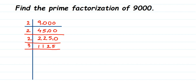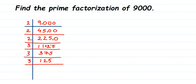Now this number is not even, so we're going to take the next prime number which is 3. 3 threes are 9, remainder 2 — that makes 22. 3 sevens are 21, remainder 1 — that makes 15. 3 fives are 15. Now we have 375. 3 ones are 3, remainder 1 — that makes 15. 3 fives are 15. Now we have 125.